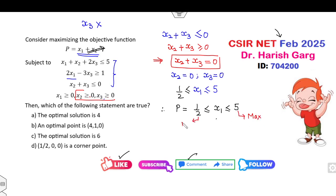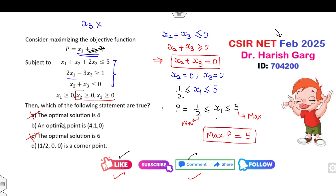This gives the maximum value and this gives the minimum value — so options A and C are cancelled. Now look at options B and D. The maximum value of p is 5. Looking at the second constraint, the optimal point suggested in option B is (4, 1, 0). If you compute p at this point, you get 5. But if you have this option ticked, you will lose your 4.75 marks because this option is wrong.